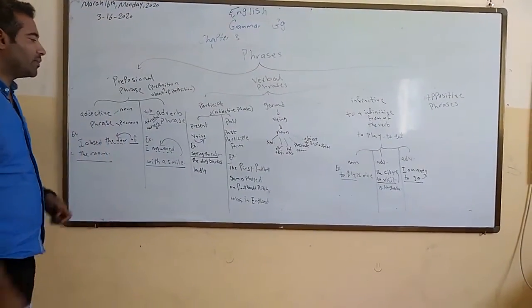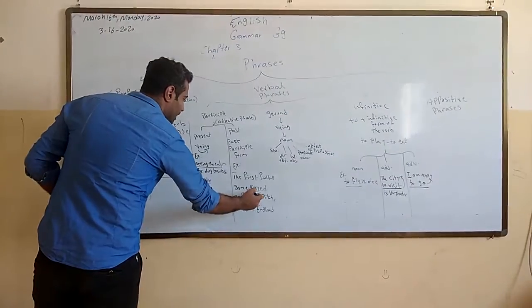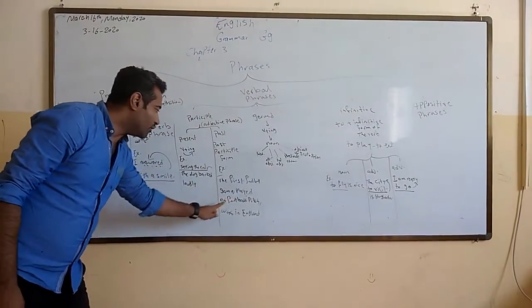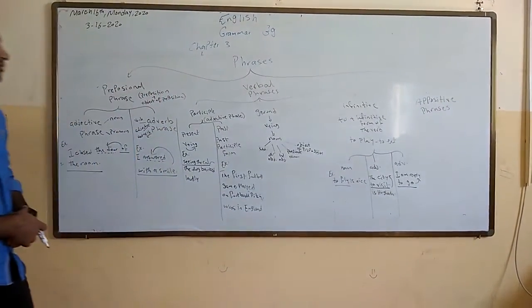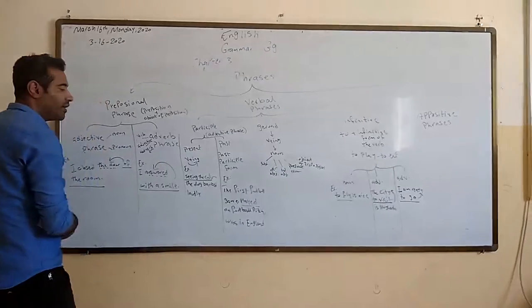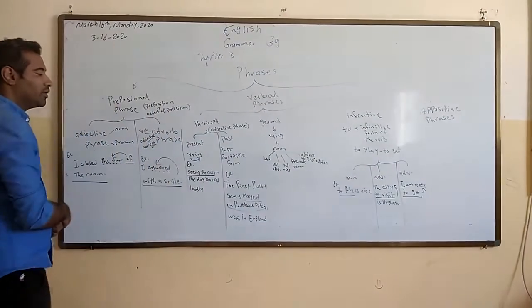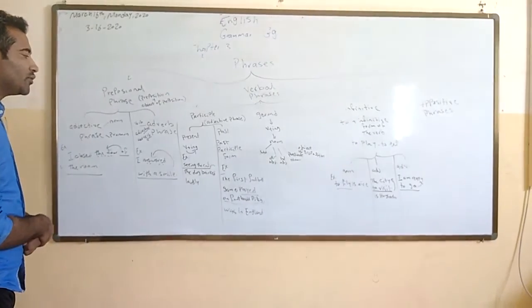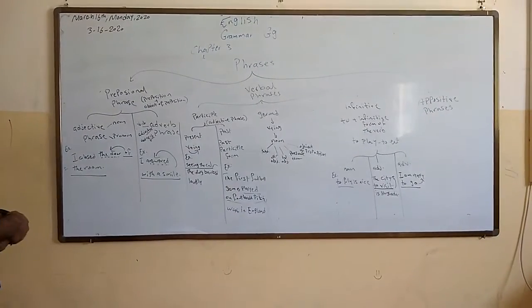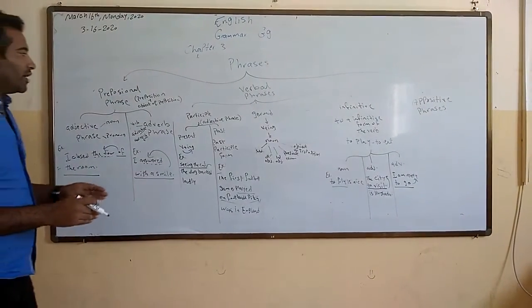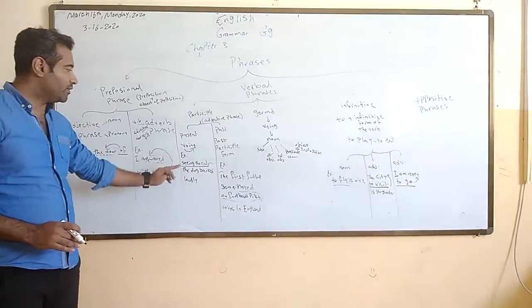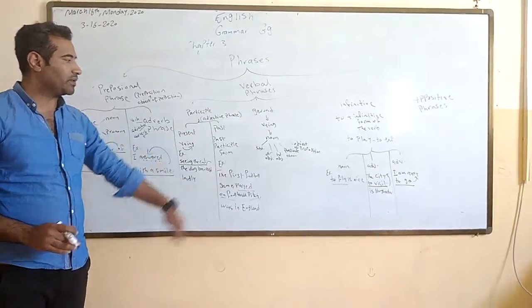For the past participle, for example: 'The first football game played on a football pitch was in England.' The past participle form here is 'played,' and the phrase is 'played on a football pitch.' What does it describe? It describes the game. So the phrase also functions as an adjective phrase — whether present participle (-ING) or past participle form, the function is as an adjective.